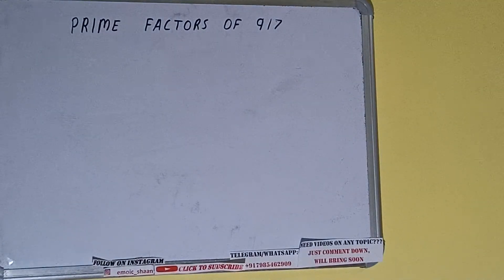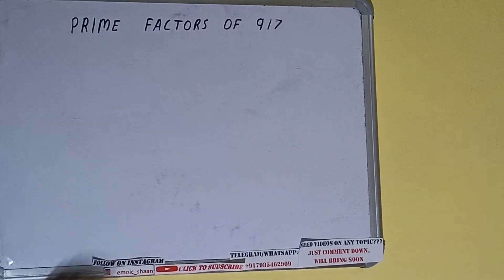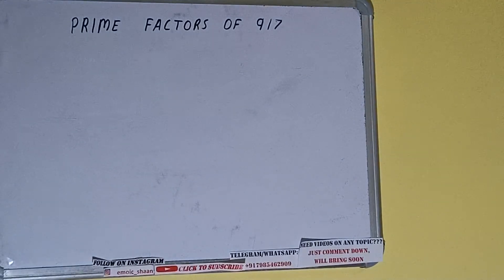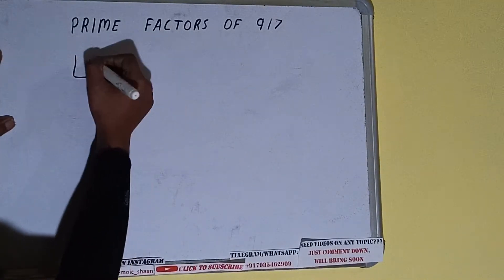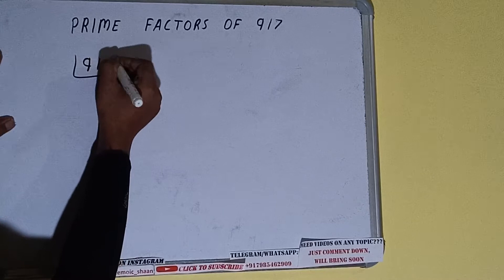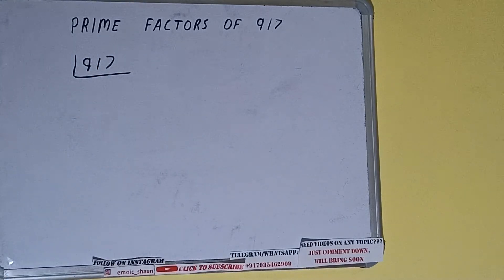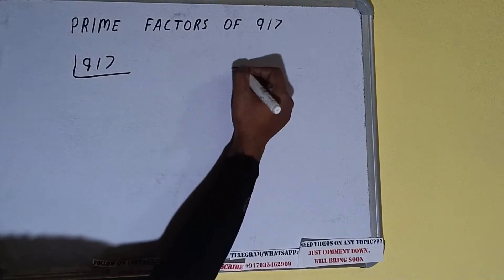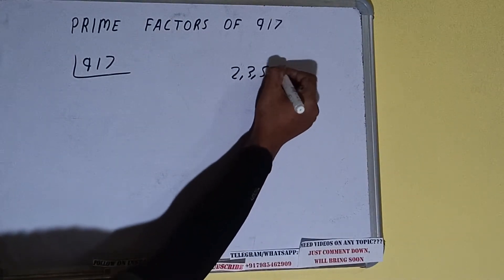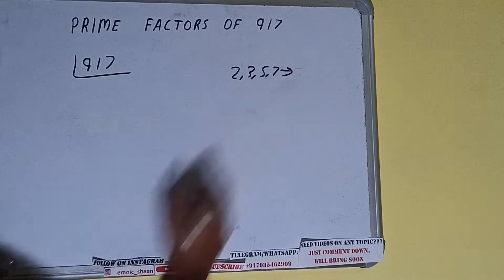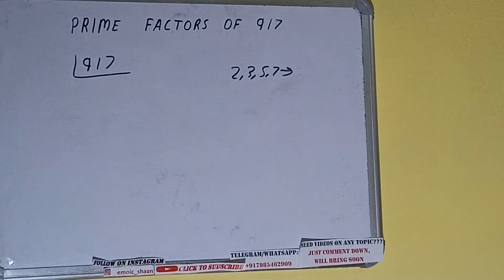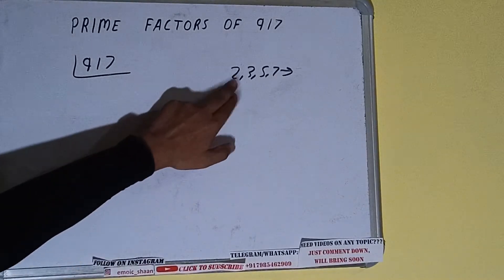Hello friends, in this video I'll be helping with the prime factors of the number 917. First we need to write the number, and we need to know what prime numbers are. Prime numbers are numbers that are divisible by one and the number itself, like 2, 3, 5, 7, and so on.